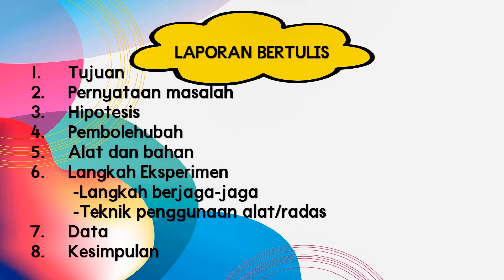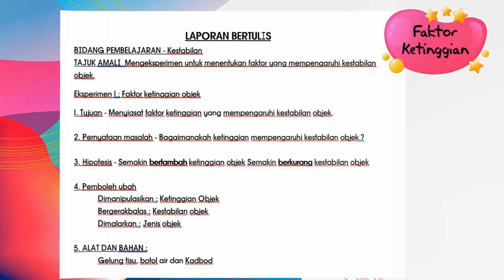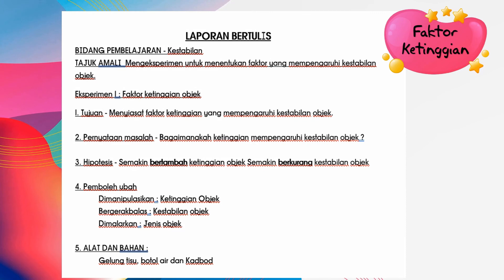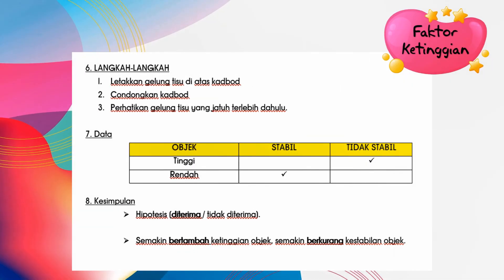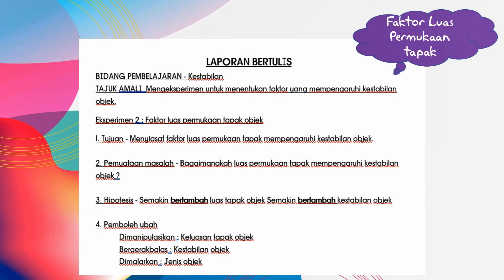Ini adalah laporan bertulis bagi amali yang telah kita buat. Cara-cara menulisnya untuk eksperimen pertama, faktor ketinggian objek, ialah: pertama tujuan, kedua penyataan masalah, ketiga hipotesis, keempat pemboleh ubah, kelima alat dan bahan, keenam langkah-langkah, ketujuh data, dan kelapan kesimpulan. Laporan bertulis bagi eksperimen kedua, iaitu faktor luas permukaan tapak objek, menggunakan format yang sama.